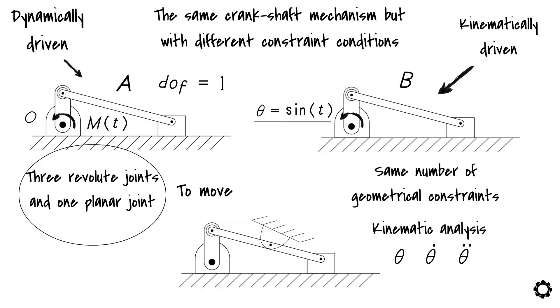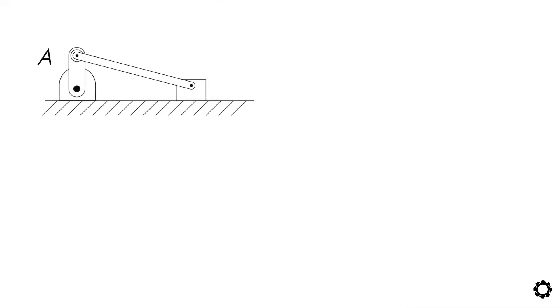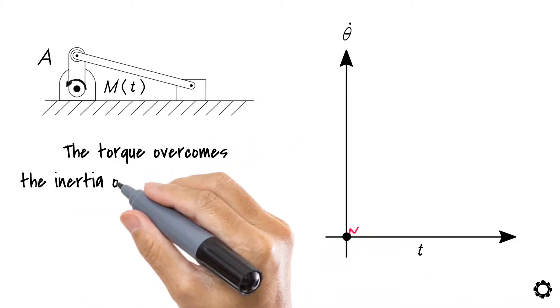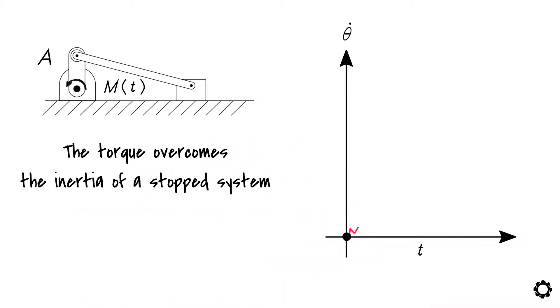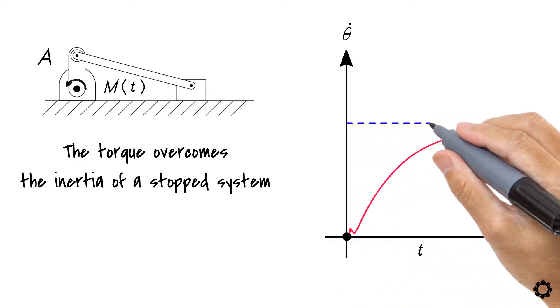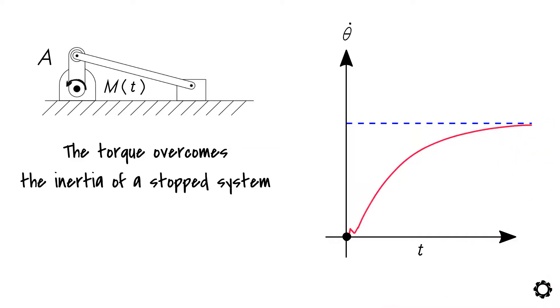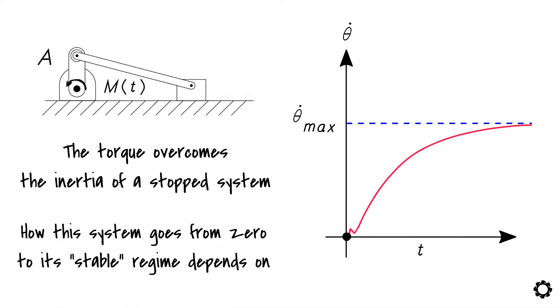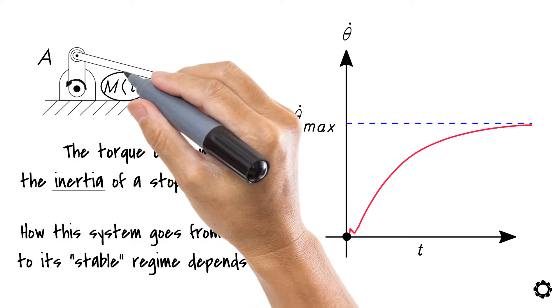Okay, but what is the difference between these two previous systems? Imagine if we have a stopped crankshaft mechanism at time equal to zero. And if we apply the torque to make it move, the system will first respond slowly while the torque overcomes the inertia of a stopped system. Then the applied torque will gradually increase the system's rotational velocity until a dynamic equilibrium where the rotational velocity has its maximum value is reached. How this system goes from zero to its stable regime depends on the system's inertia and external loads applied to it.